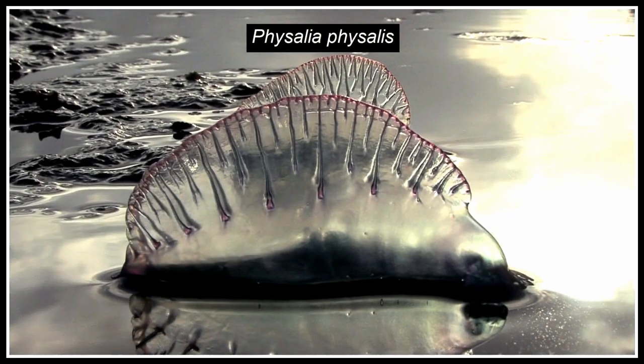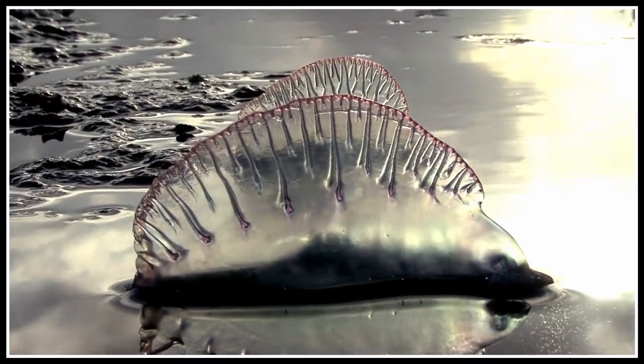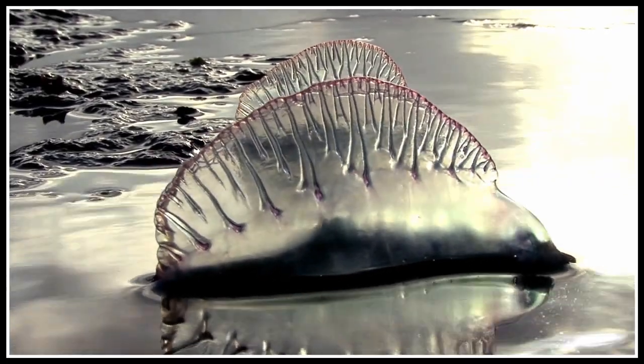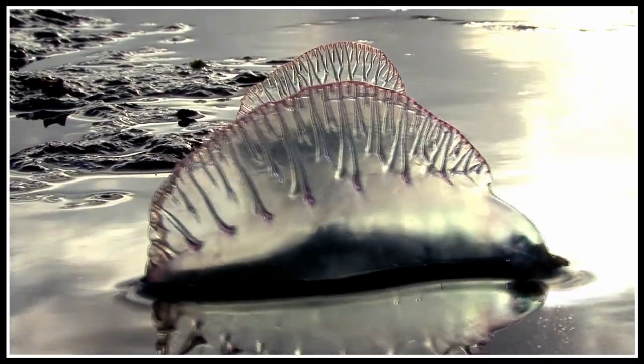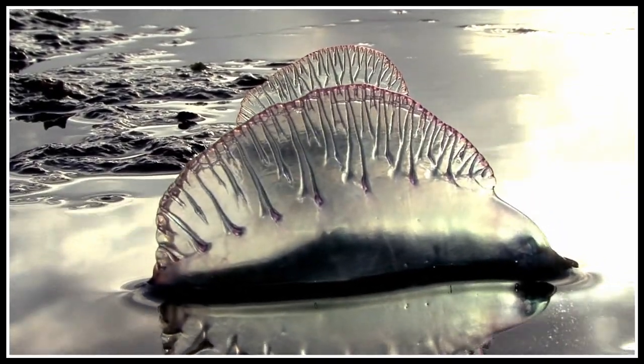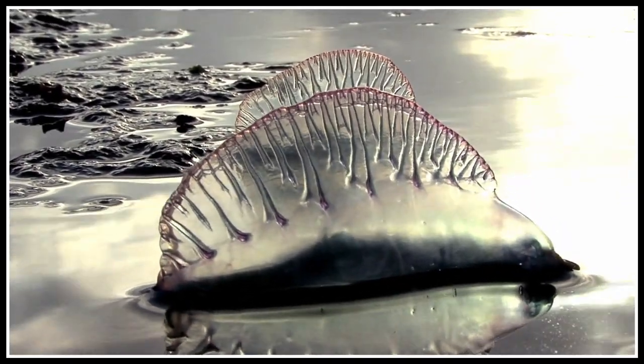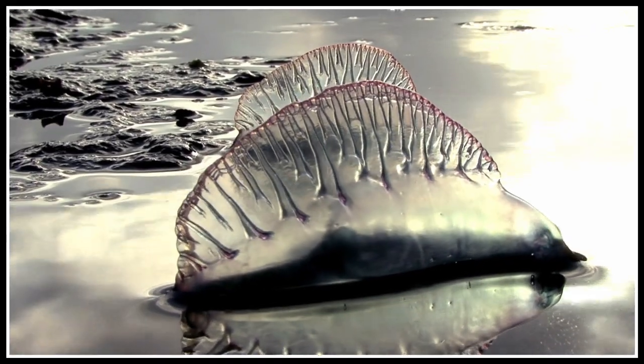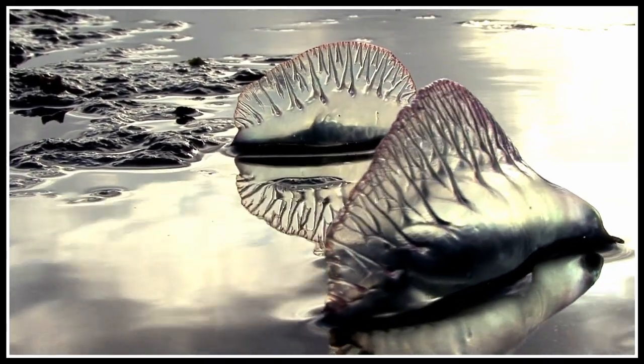The Portuguese man o' war has a sail that tilts from right to left in some individuals and left to right in others. These distinct mirror image sails are pushed in opposite directions by the wind, reducing the risk of all specimens being simultaneously washed ashore.